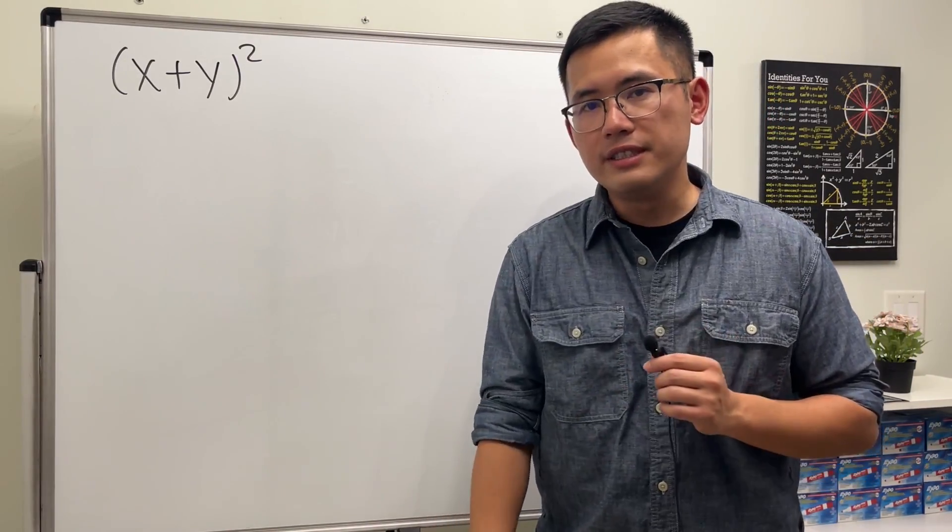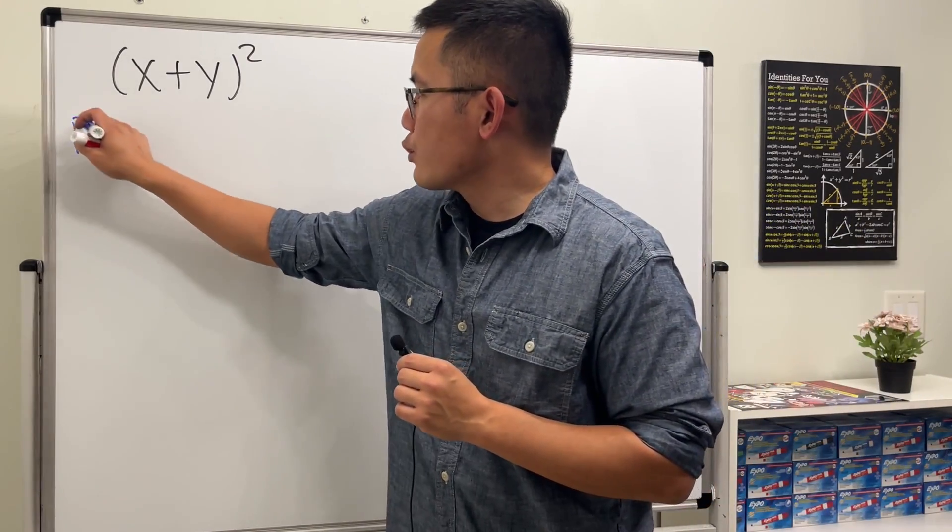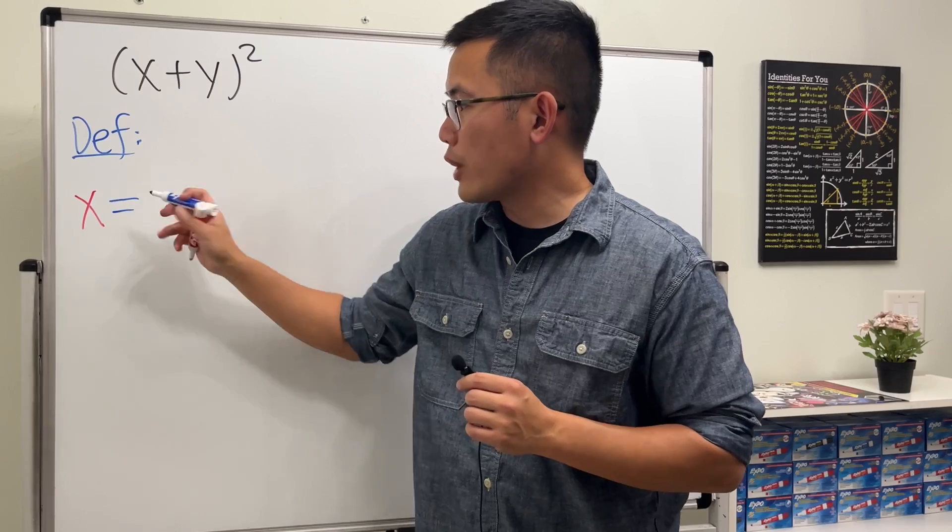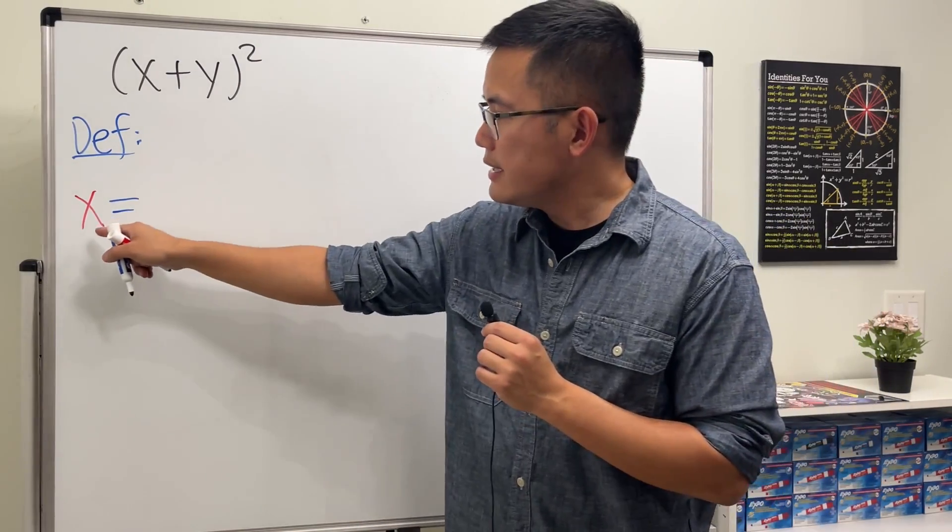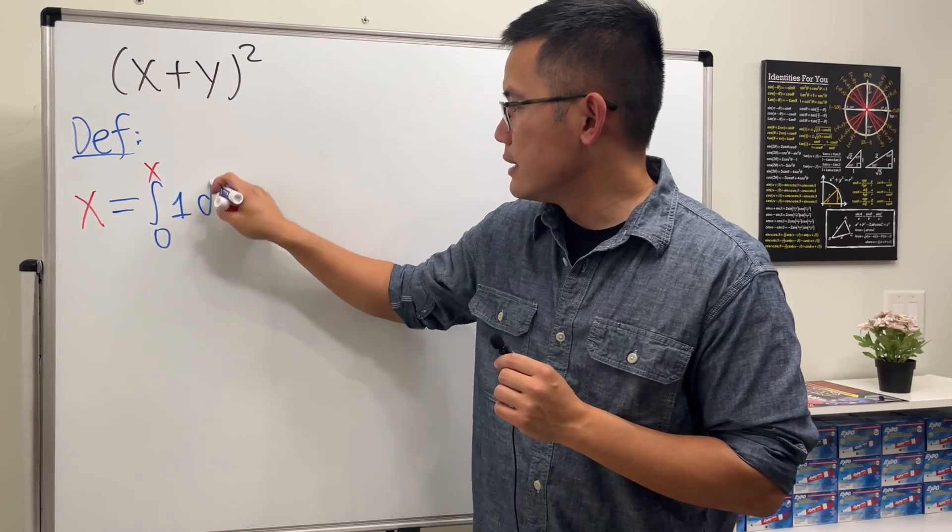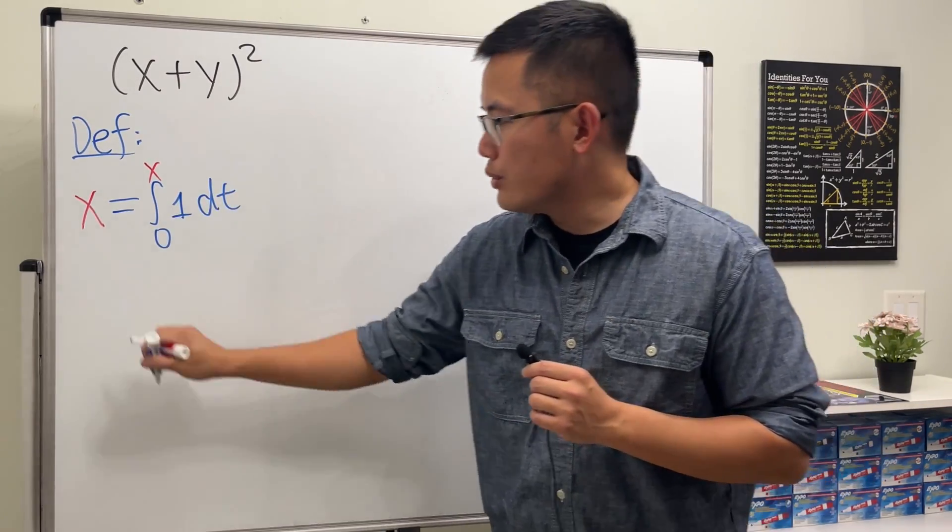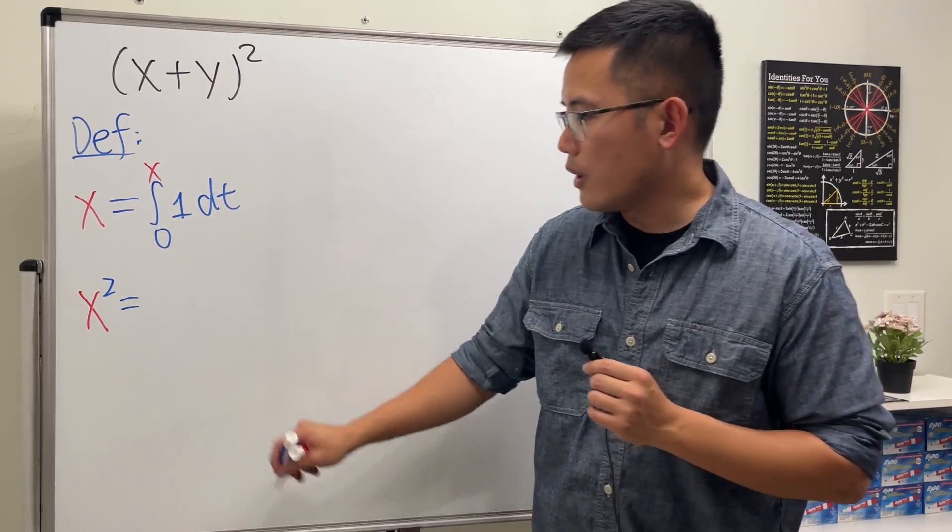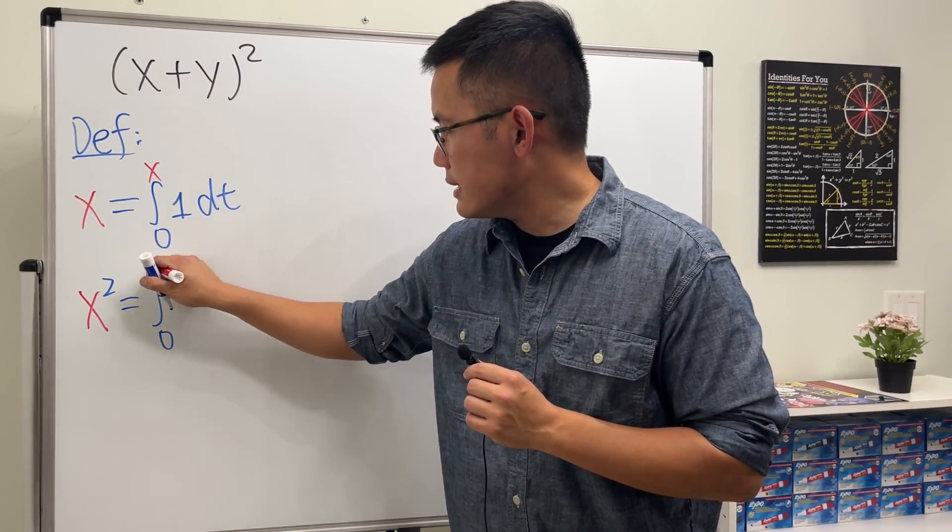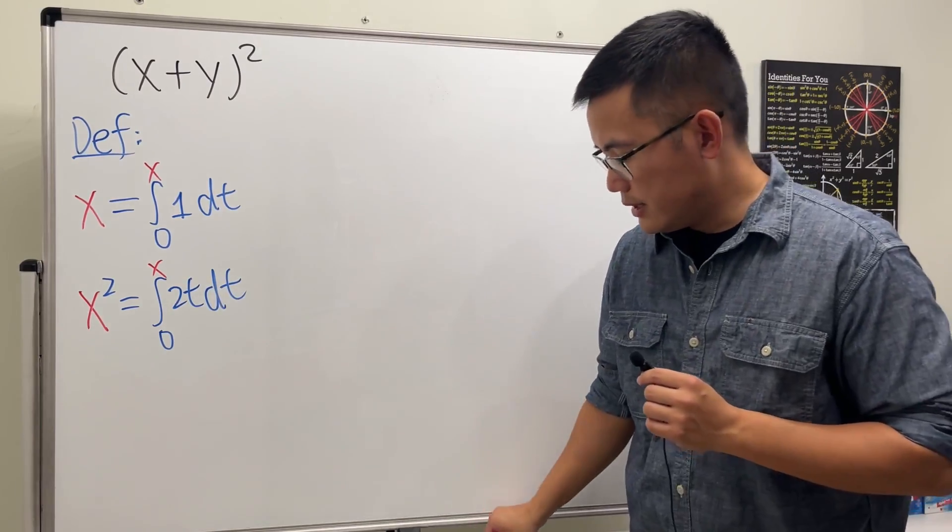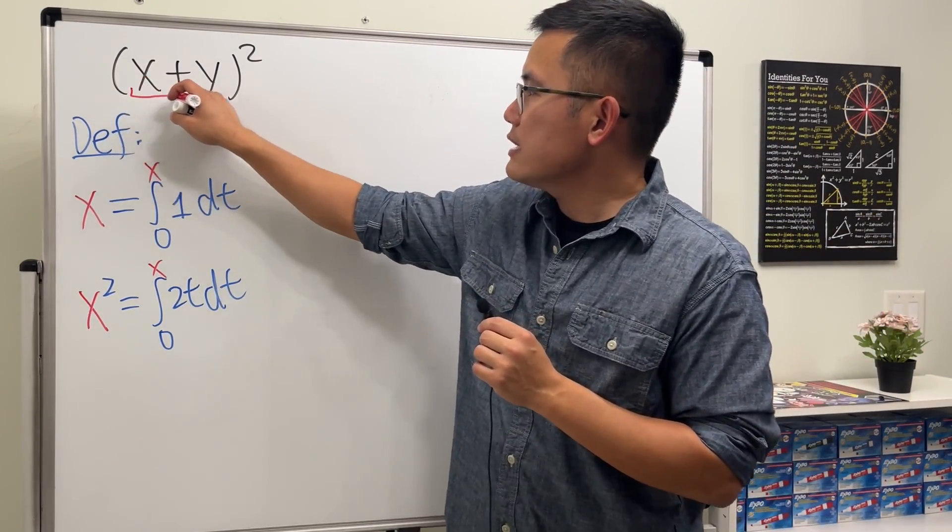All right, in order for us to do this, we will first need some definitions, so let me write them down right here. Let's define what x is first, and of course in calculus we'll try to define this as an integral. Let's define x to be the integral going from 0 to x of 1 dt. Next we need to have x to the second power, and again we'll define this as an integral as well: the integral going from 0 to x of 2t dt.